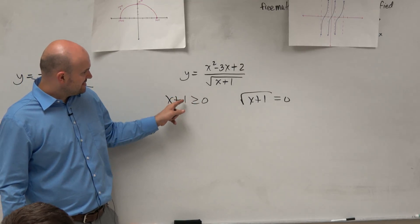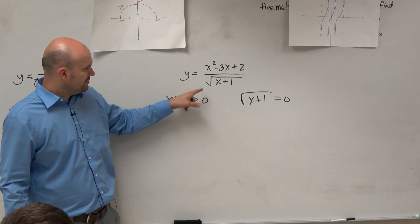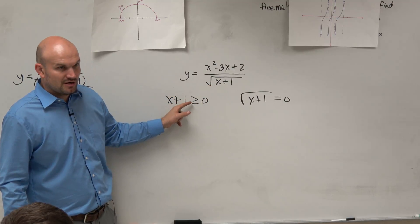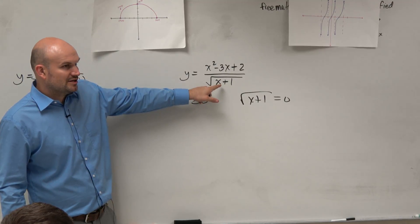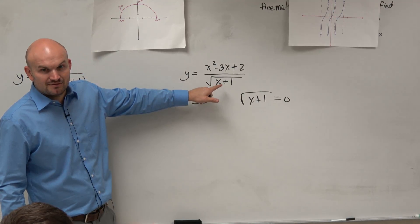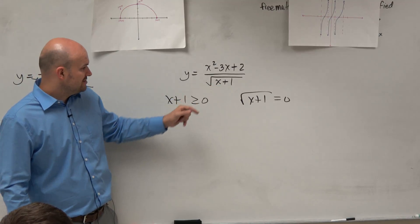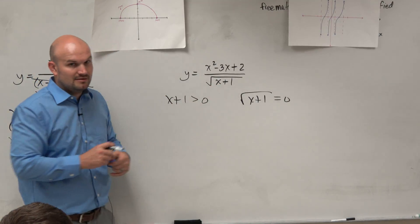Because if we look at this, if we want this to be greater than or equal to 0, do we really want x plus 1 to be 0? Because what if that makes that 0? Then the whole denominator is equal to 0. Don't you guys agree?